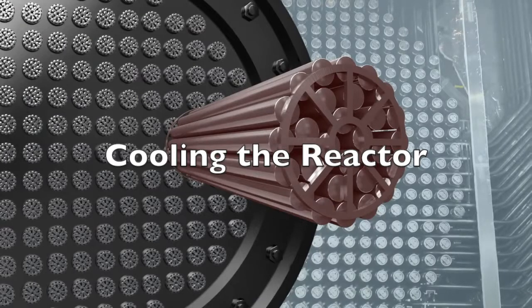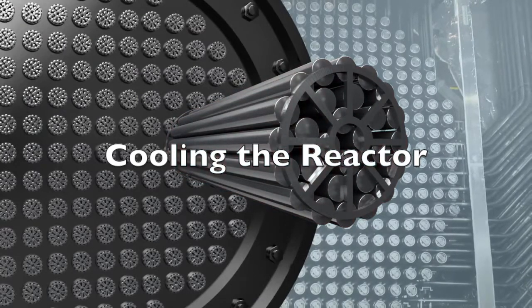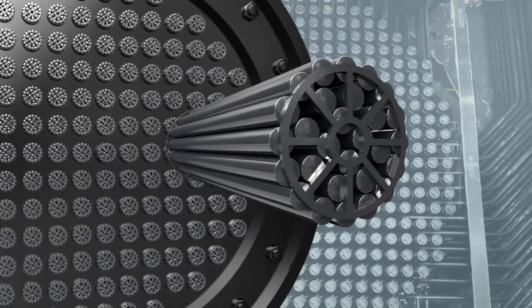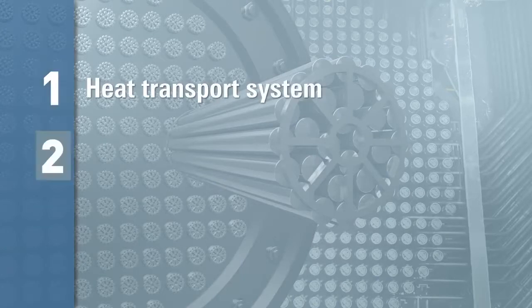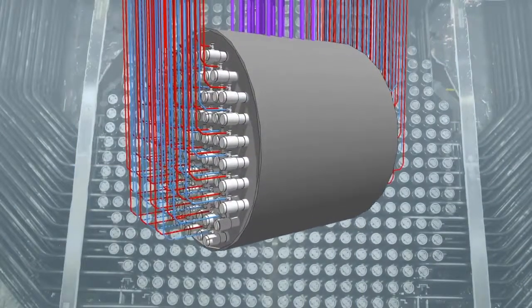Now let's look at the second basic function, cooling the fuel. Because of decay heat, nuclear fuel requires continuous cooling whether or not the reactor is operating. Fuel cooling involves three main systems: the heat transport system, the steam system, and the condenser cooling system.